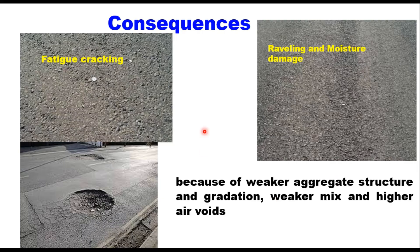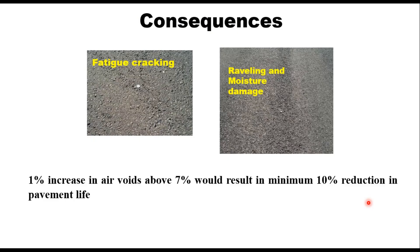What are the consequences of segregation? Physical and thermal segregation result in reduced density, higher percent air voids, and mat permeability. This is because of weaker aggregate structure and gradation, weaker mix, and that results in higher air voids. Air and water intrusion will cause disintegration of the compacted mix and with time this results in early pavement failure. As a rule of thumb, a 1% increase in air voids above 7% would result in a minimum 10% reduction in pavement life.